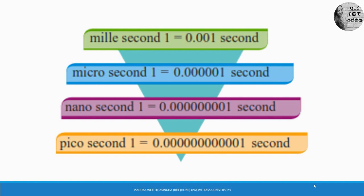A millisecond is 0.001 of a second. A microsecond is 0.000001 of a second. Millisecond, microsecond, nanosecond, picosecond — each is a portion of a second. When comparing the first generation to the fourth generation, in the fourth generation the execution speed is very high, and the unit is picosecond.